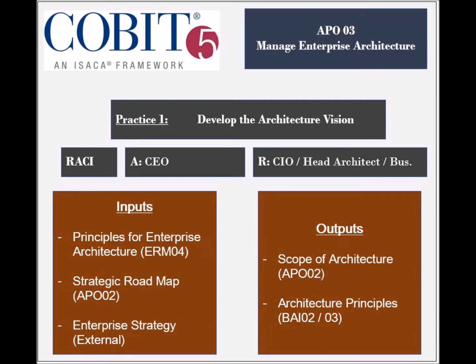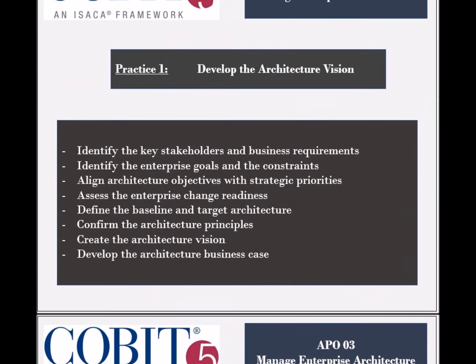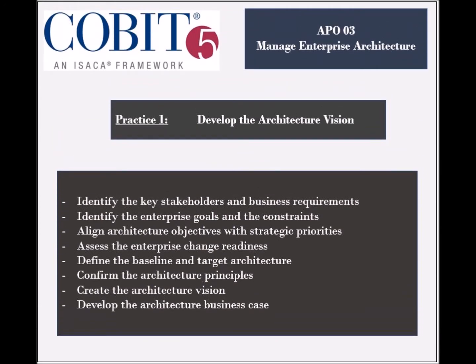This practice receives three inputs: the principles for enterprise architecture from the EDM-4 process, the strategic road map from the AP-02 process, and the enterprise strategy from external sources. It generates three outputs as well, which include the scope of architecture to be used by the AP-02 process and the architecture principles to be used by the BAI-2 and BAI-3 processes.